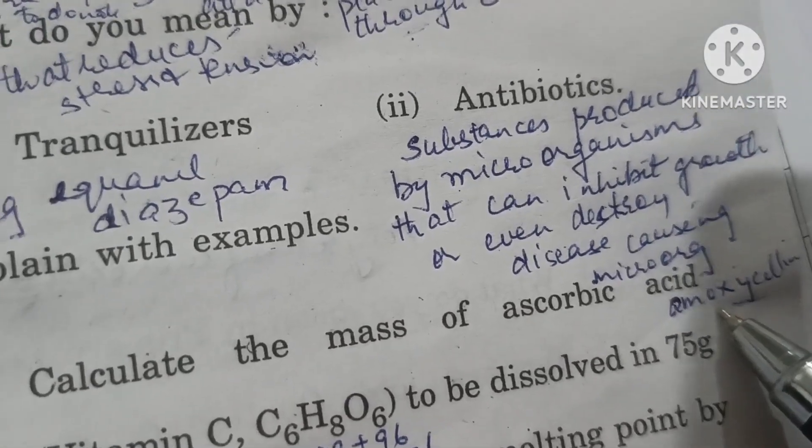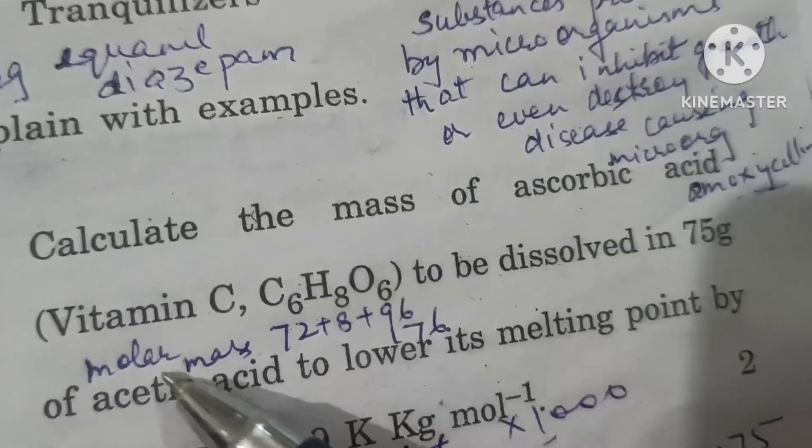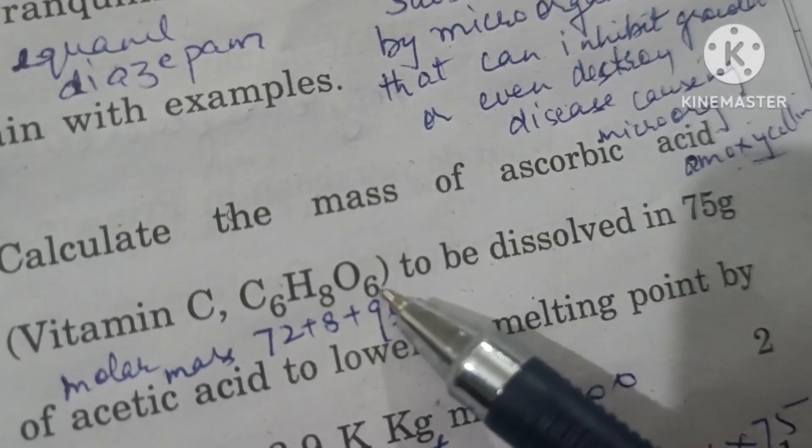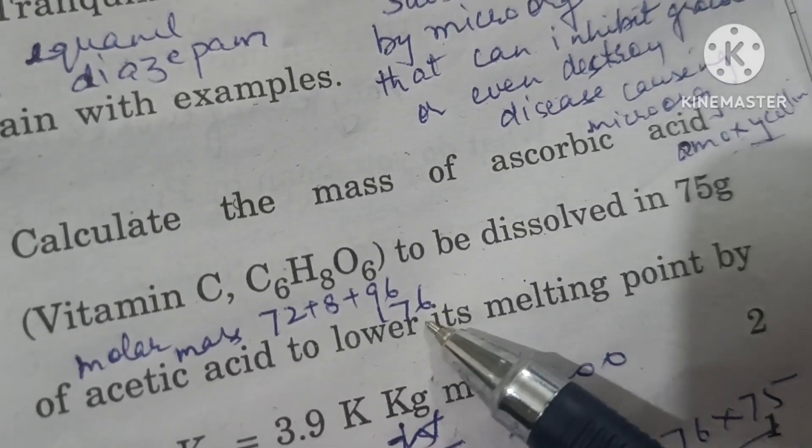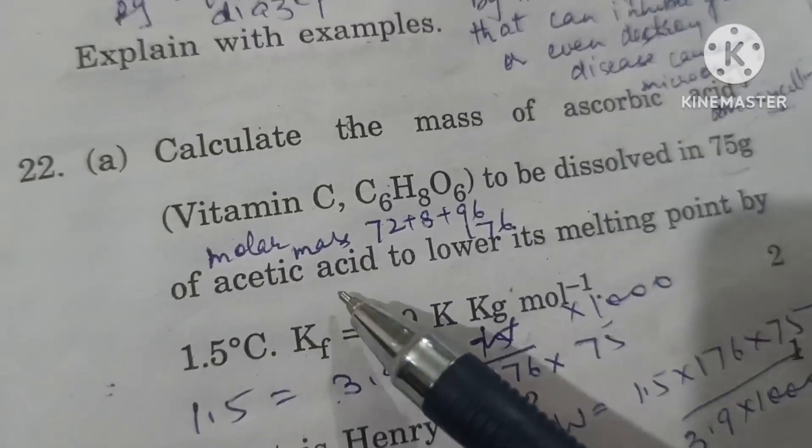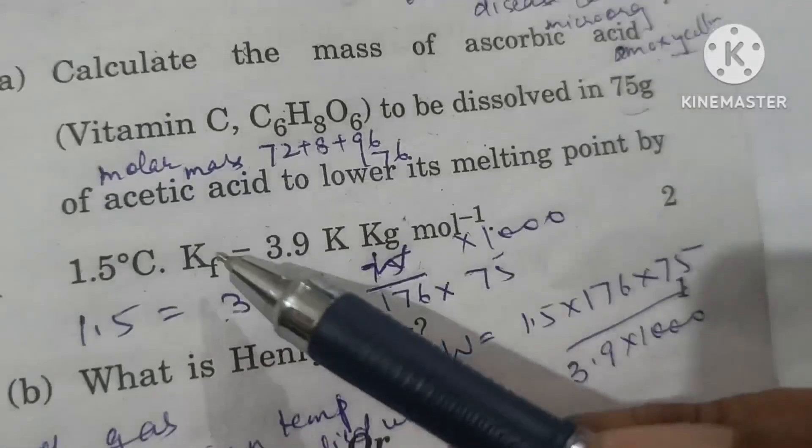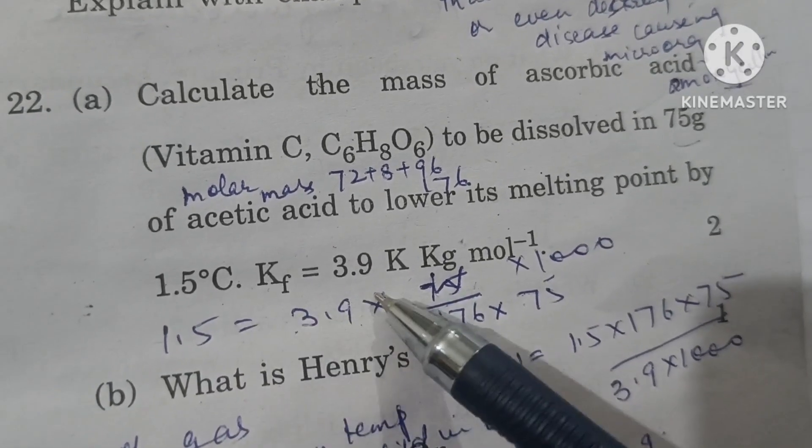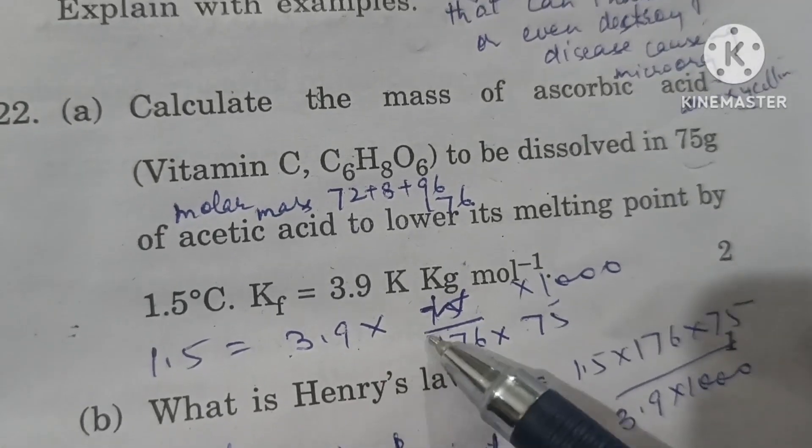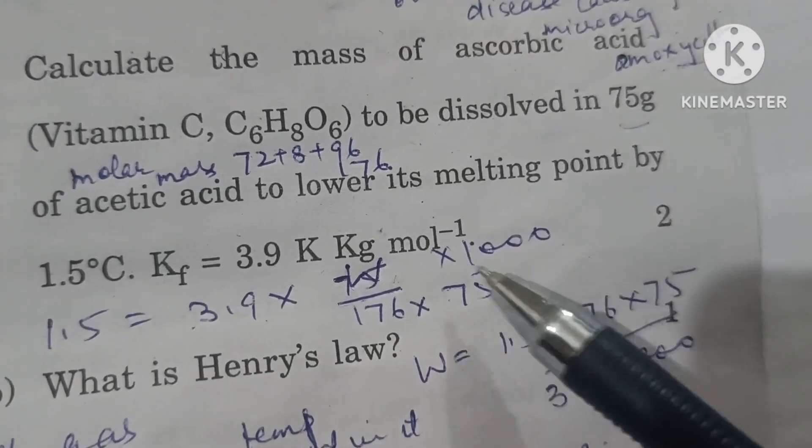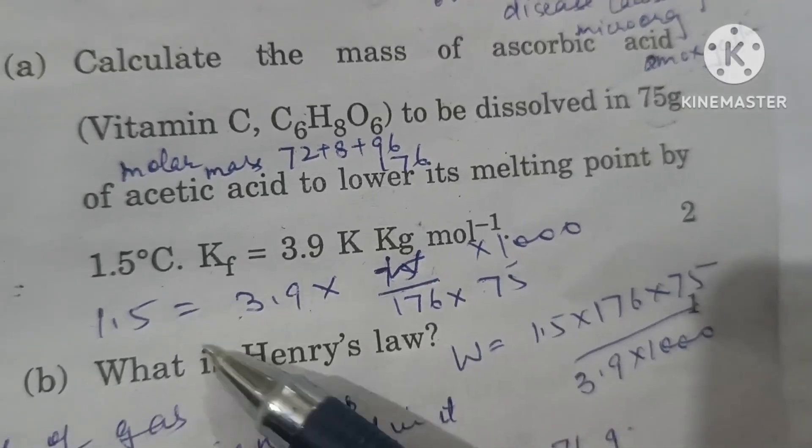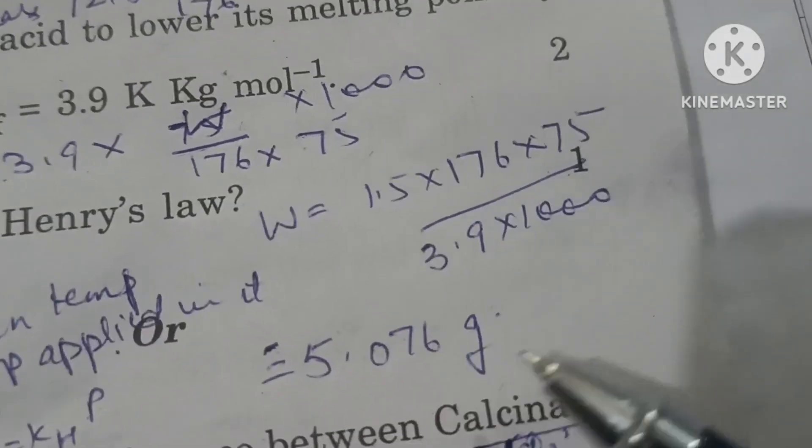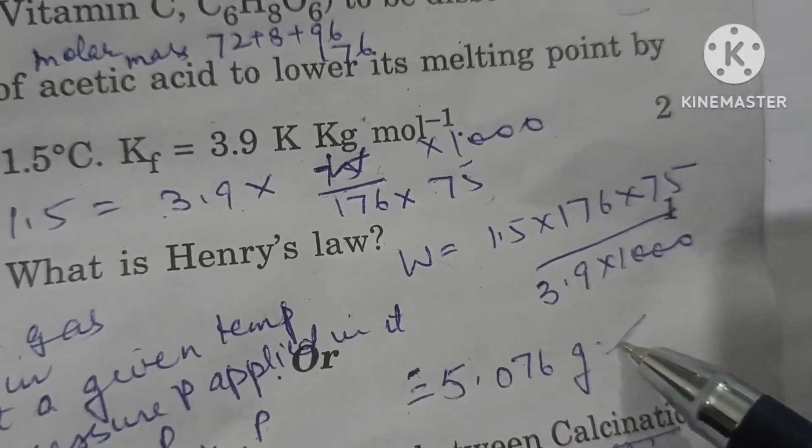Calculate the mass of ascorbic acid, vitamin C, with formula C6H8O6. The molecular mass is 12 times 6 equals 72, plus 8, plus 16 times 6 equals 96, total is 176. We have to dissolve this in 75 grams acetic acid. The melting point is lowered by 1.5 degrees, so delta Tf equals Kf times molality. Kf is 3.9 kelvin kg per mol. Solving: 1.5 times 176 times 75 divided by 3.9 times 1000 equals 5.076 grams.